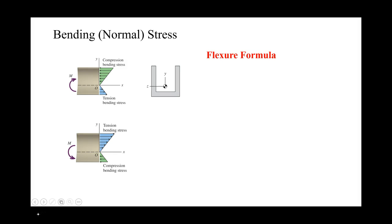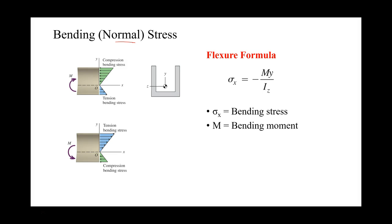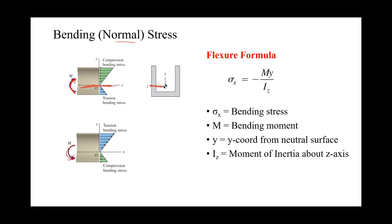To calculate our bending stress we use what's called the flexure formula. The flexure formula is written as sigma_x equals negative My over I_z, where sigma_x is our bending stress — a normal stress. M is our bending moment, which can be positive or negative. Y is the y-coordinate from our neutral surface, and I_z is the moment of inertia about the z-axis.